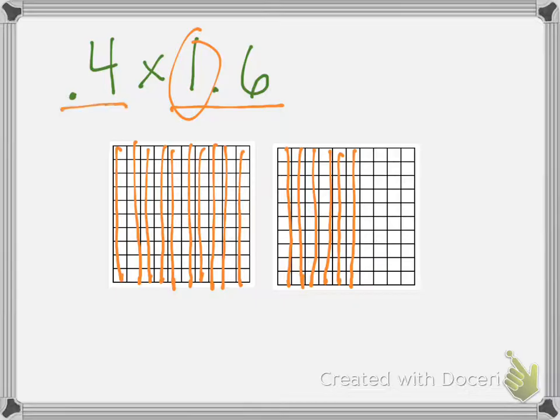And then we want to see what is 4 tenths of this. So when we do this, you want to be careful to go all the way across. Because we want 4 tenths of this. So we're going to go like this.